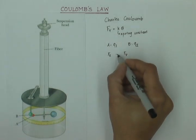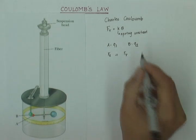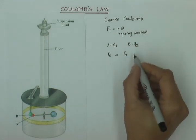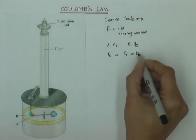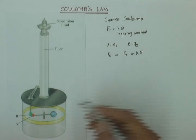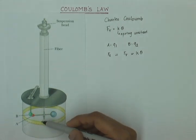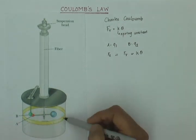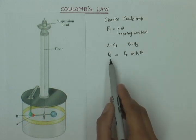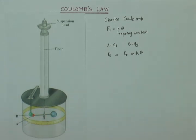We can write that at equilibrium FE is equal to FR and that we know is equal to the spring constant of the wire times theta. So, the angle of deflection can be read out easily through the scale. And so, we can find out theta, we know the spring constant and you can find out what is the value of the electric force at equilibrium.